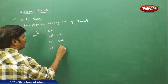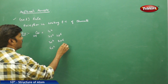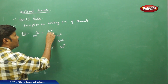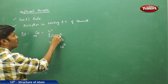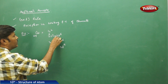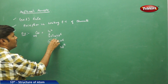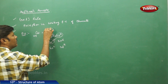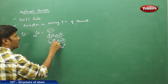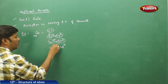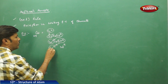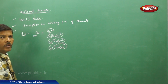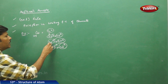Continuing copper's configuration: 3d9. So the full notation is 1s2, 2s2, 2p6, 3s2, 3p6, 4s2, 3d9. I am circling all the orbitals to avoid confusion.